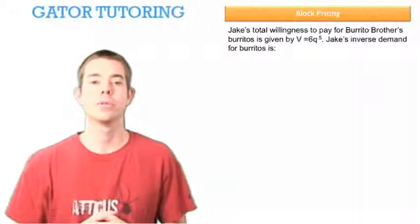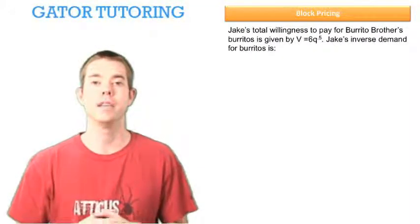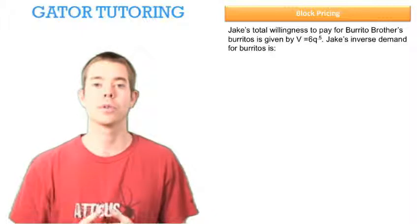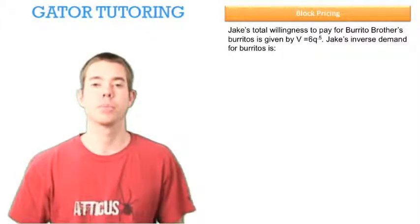Jake's total willingness to pay for Burrito Brothers Burritos is given by V equals 6 times the square root of Q. Jake's inverse demand for burritos is blank.